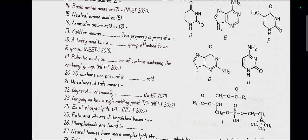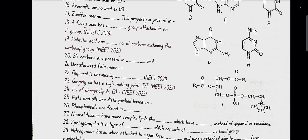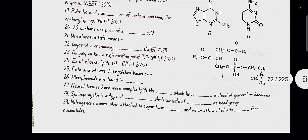A fatty acid has a carboxylic group attached to an R group. Palmitic acid has 15 number of carbons excluding the carboxylic group. 20 carbons are present in arachidonic acid. Unsaturated fat means it has one or more C double bond.